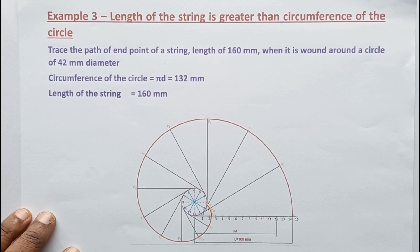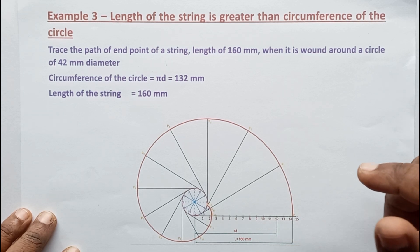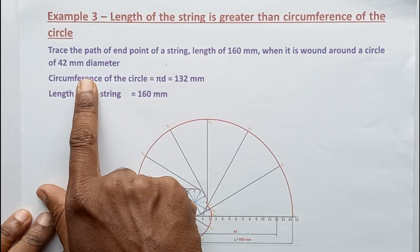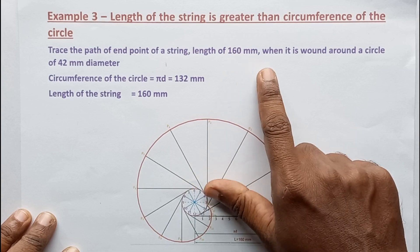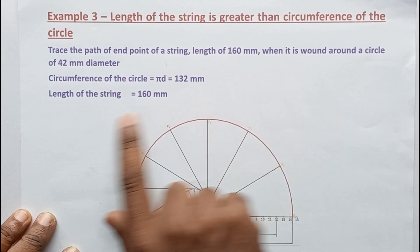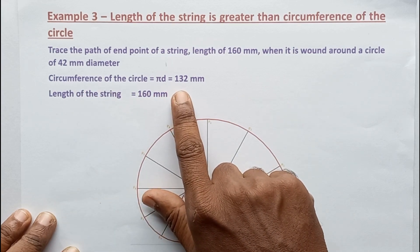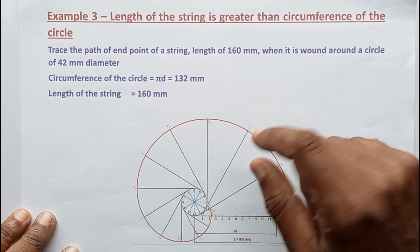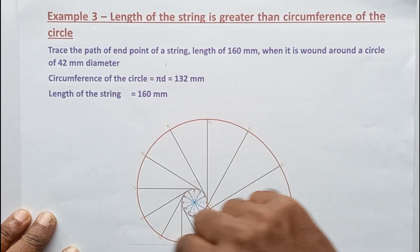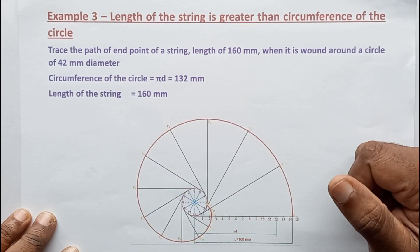In this video lesson, we are going to discuss construction of involute when the length of the string is greater than the circumference of the circle. Here is the example we are going to discuss: trace the path of the end point of a string of length 160 mm when it is wound around a circle of 42 mm diameter. The circumference length of the circle is equal to 132 mm. The involute shape is like this. Let us see how to construct this involute using geometric constructions.